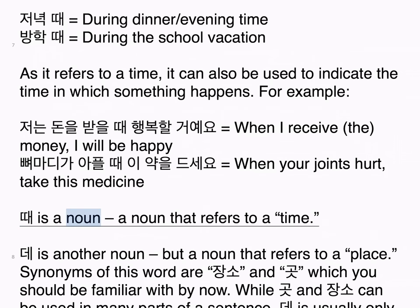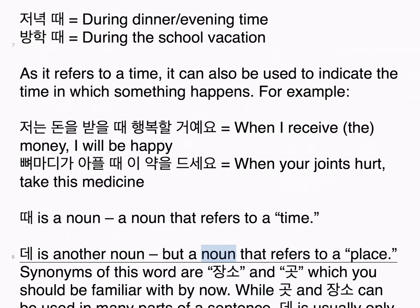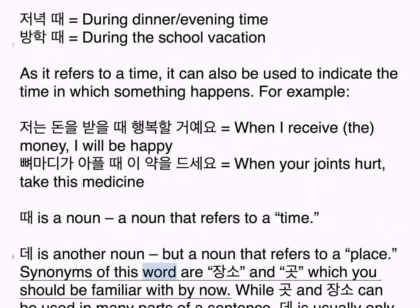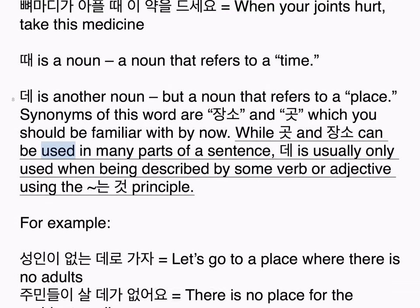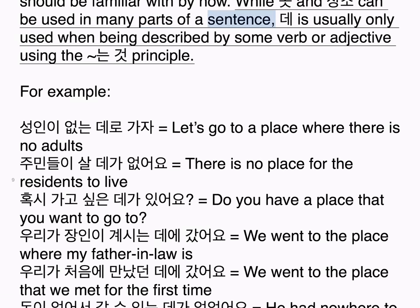때 is a noun — a noun that refers to a time. 데 is another noun, but a noun that refers to a place. Synonyms of this word are 장소 and 곳, which you should be familiar with by now. While 곳 and 장소 can be used in many parts of a sentence, 데 is usually only used when being described by some verb or adjective using a 는 것 principle.